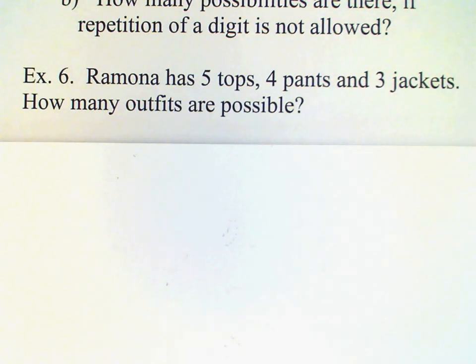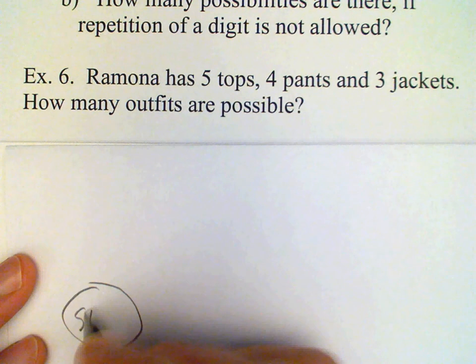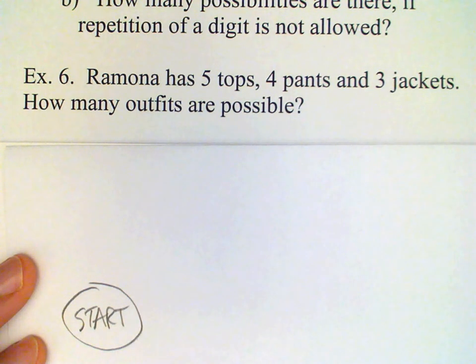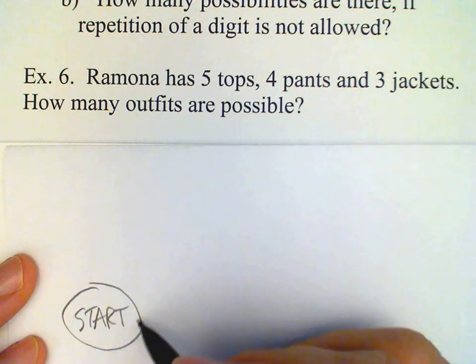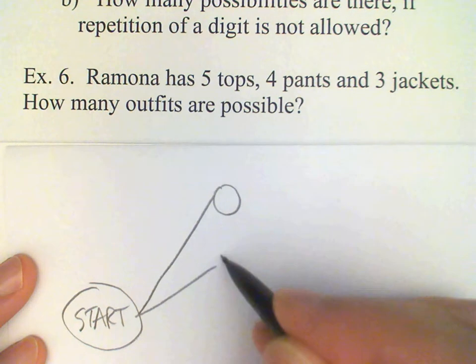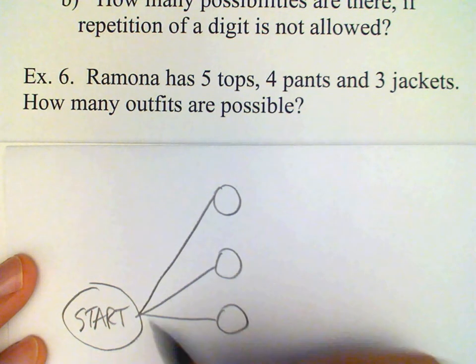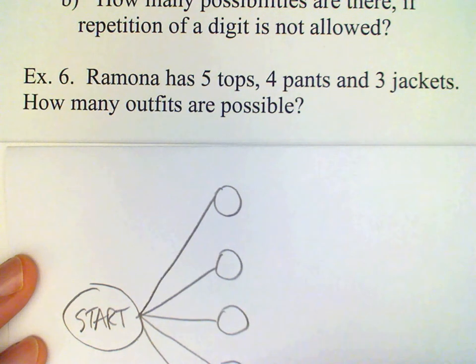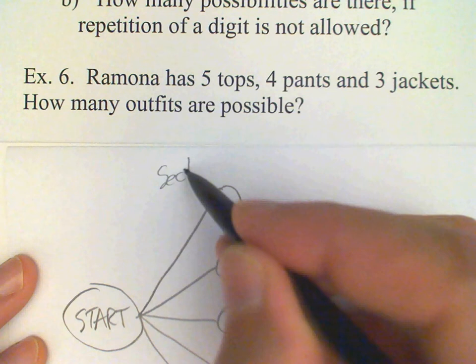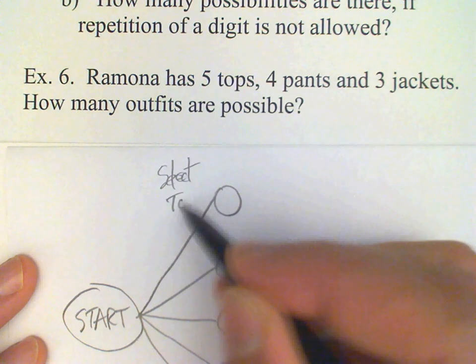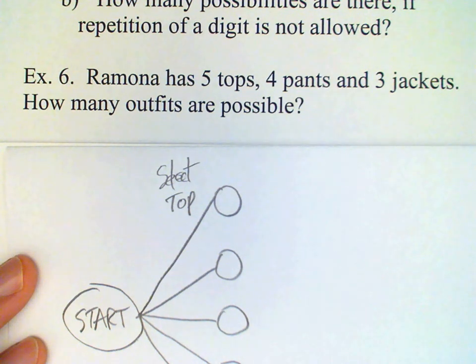And, of course, we're going to assume here that all of these items of clothing can go with any other item, which may not be a good assumption. Okay, so again, we can start with our tree diagram. In this case, there's going to be too many possibilities for me to write out. Okay, so select the top.